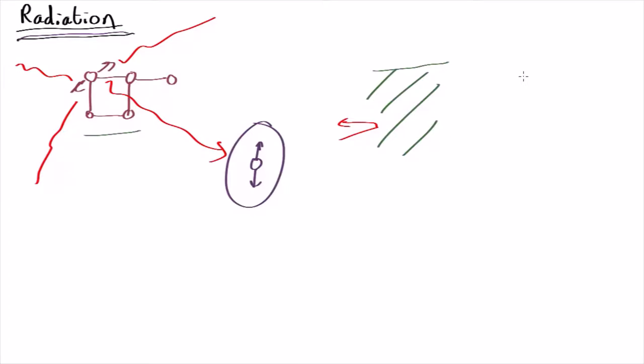Likewise, a thermos flask will typically have two layers of mirror inside with a vacuum between them. So that means the heat inside has a lot of trouble getting to the outside. It can't conduct because there's a vacuum. It can't convect because it's a vacuum. And it can't radiate very much because the mirror surface reflects most of it.